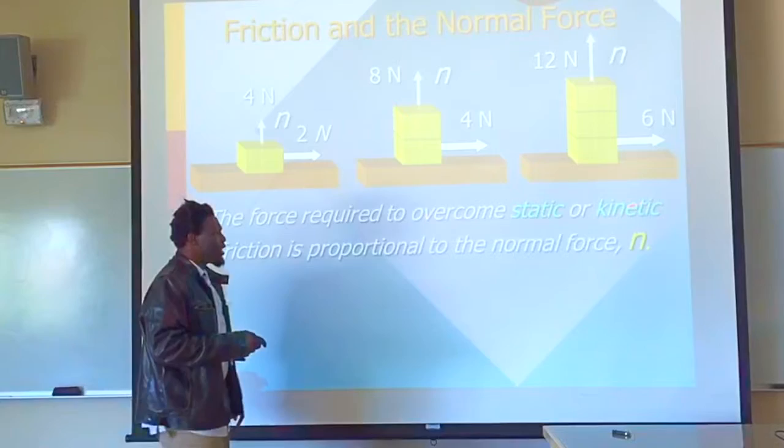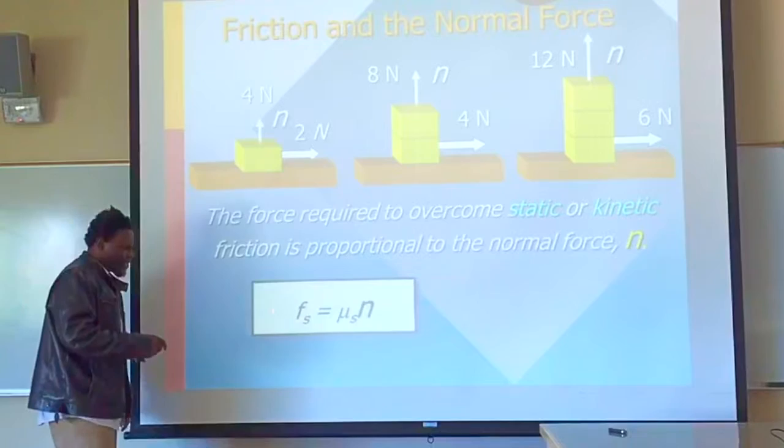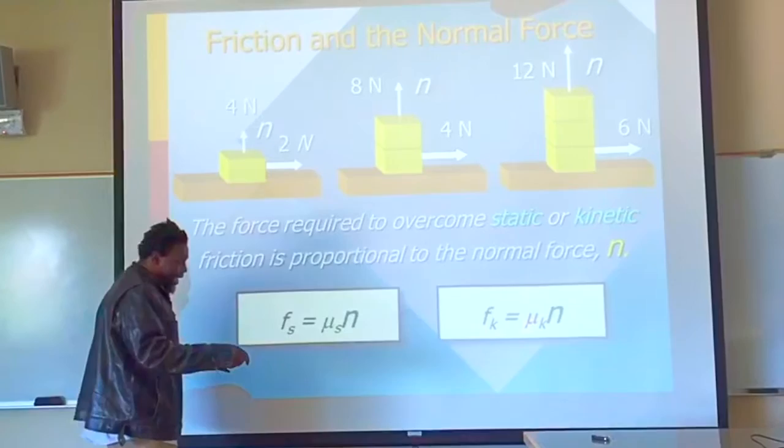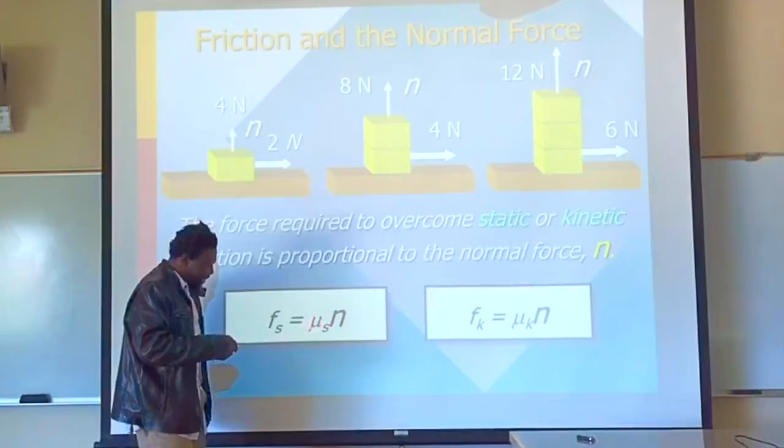Therefore, we can write the friction force to be some coefficient times the normal force. For kinetic friction, we can write some coefficient times the normal force. Mu-S and Mu-K are referred to as the coefficients of friction. Mu-S is the coefficient of static friction, and Mu-K is the coefficient of kinetic friction.